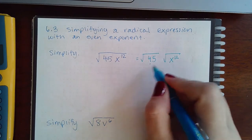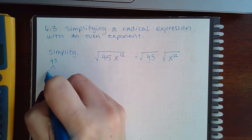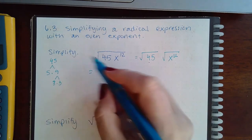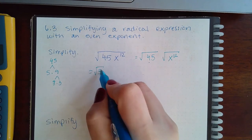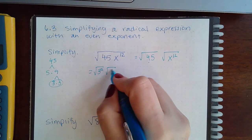Now for the numbers, we already know to split that up. So I know that 45 is 5 times 9, and 9 is 3 times 3. So 45 I can split up into the 3 squared, the pair, and square root of 5.